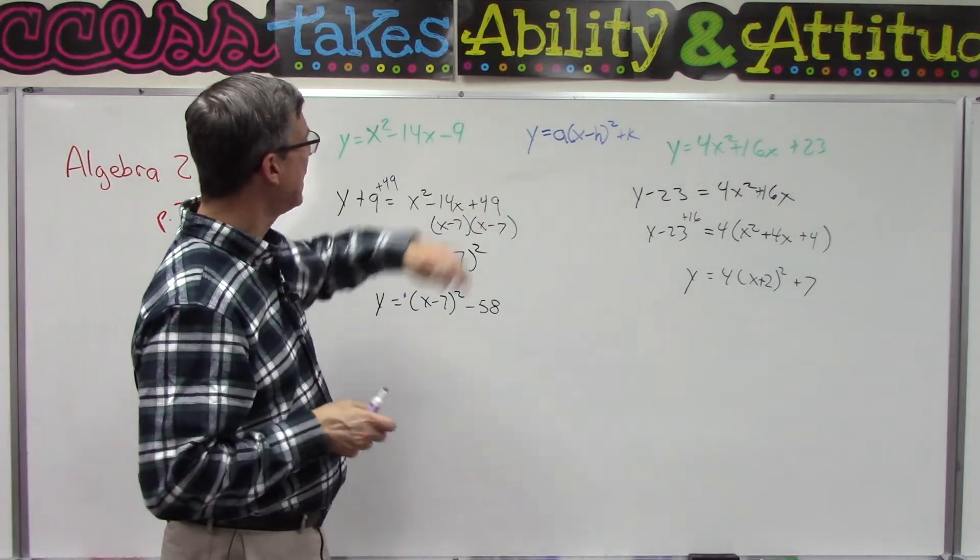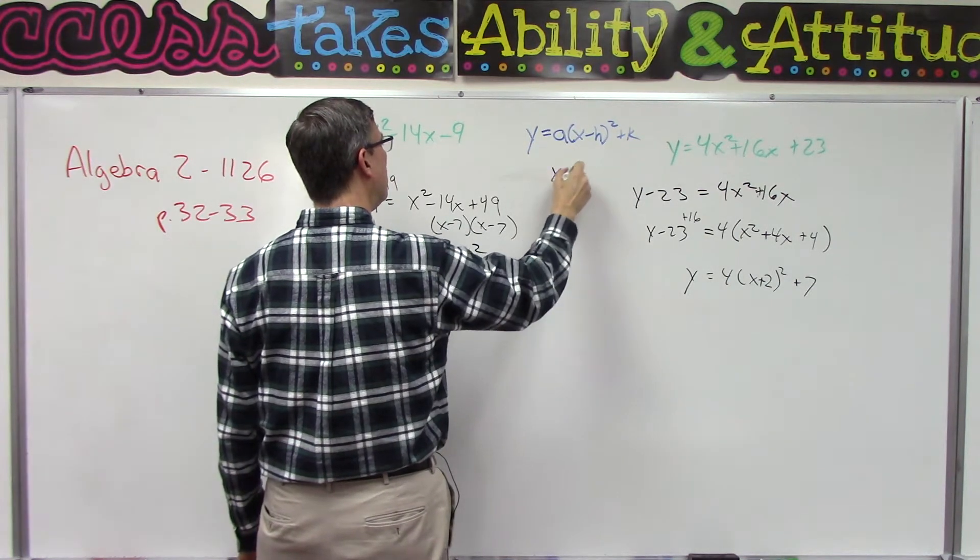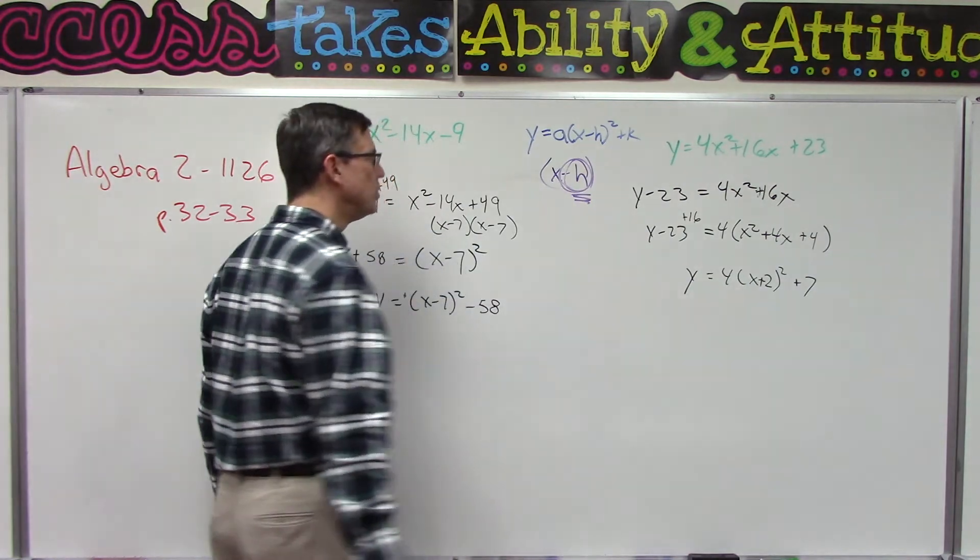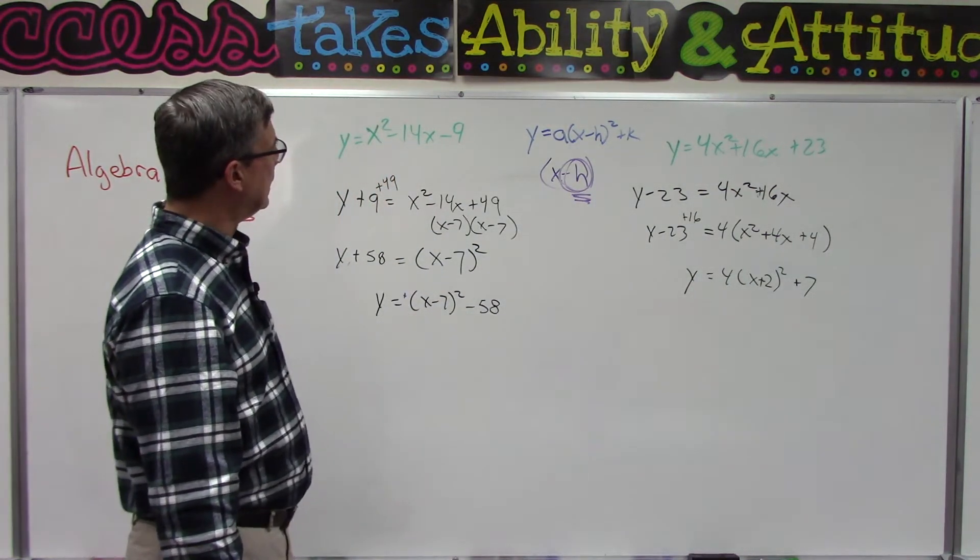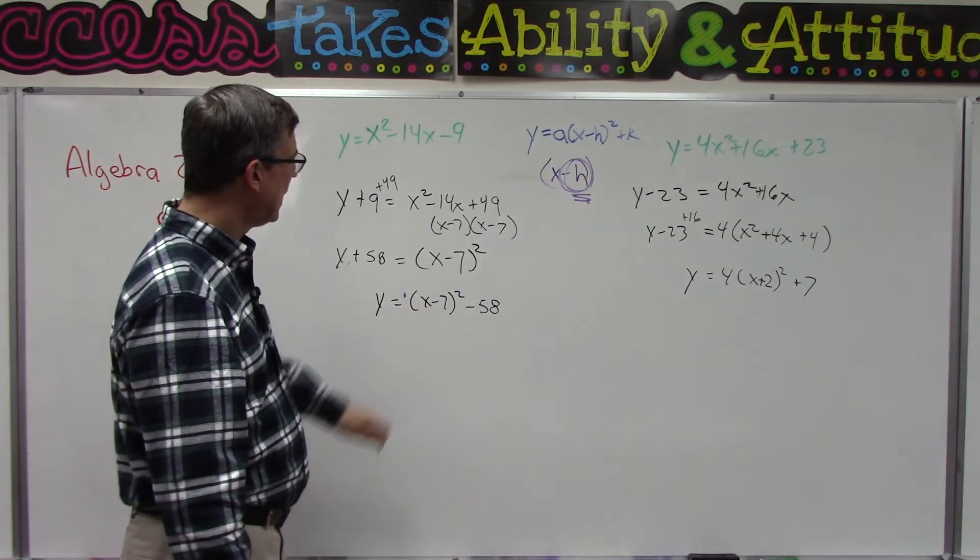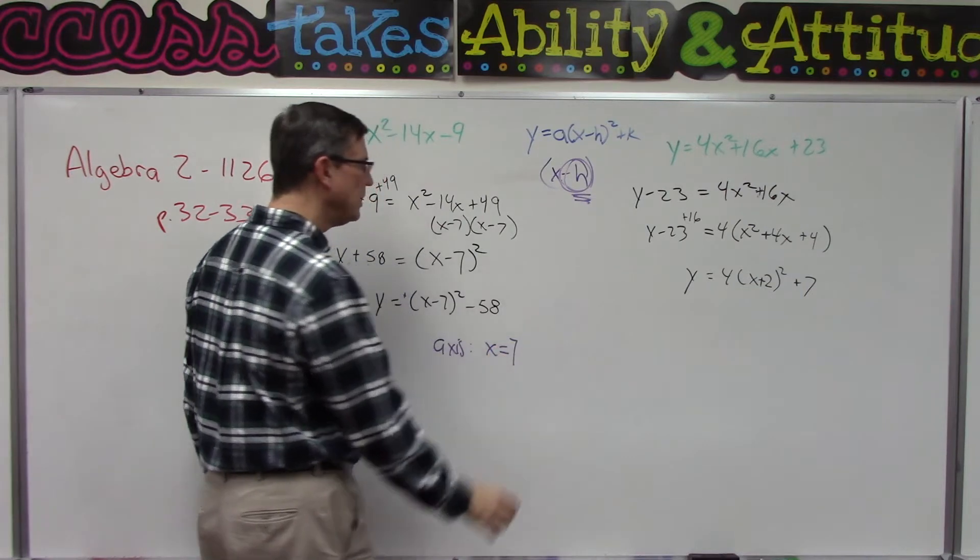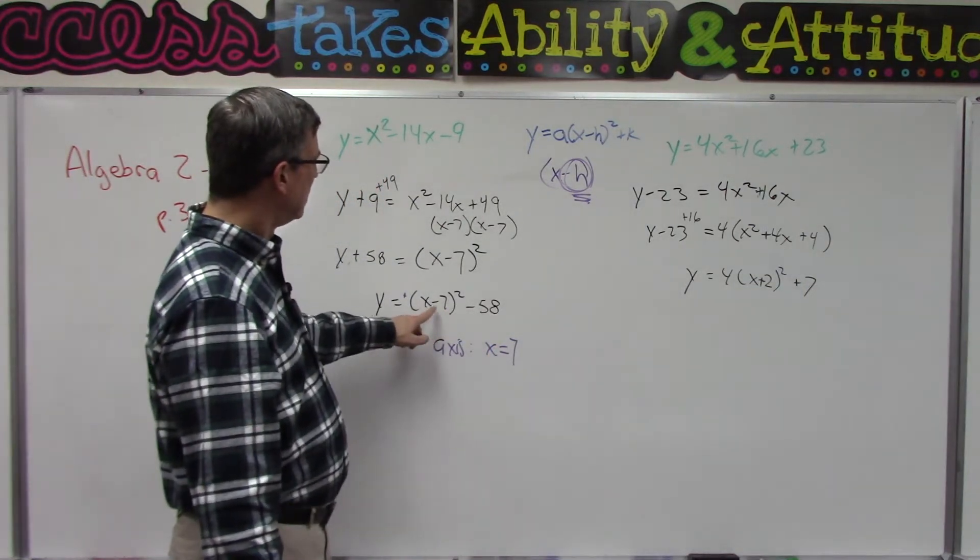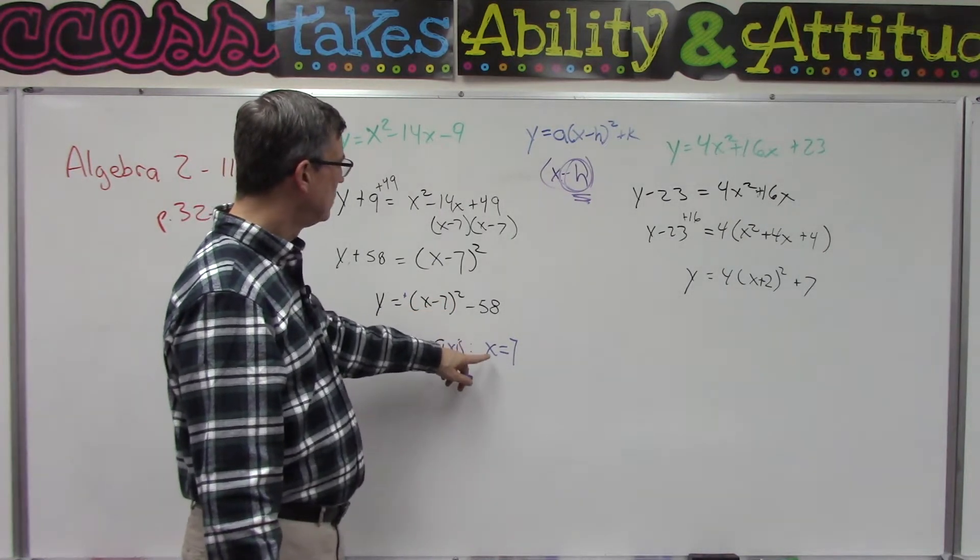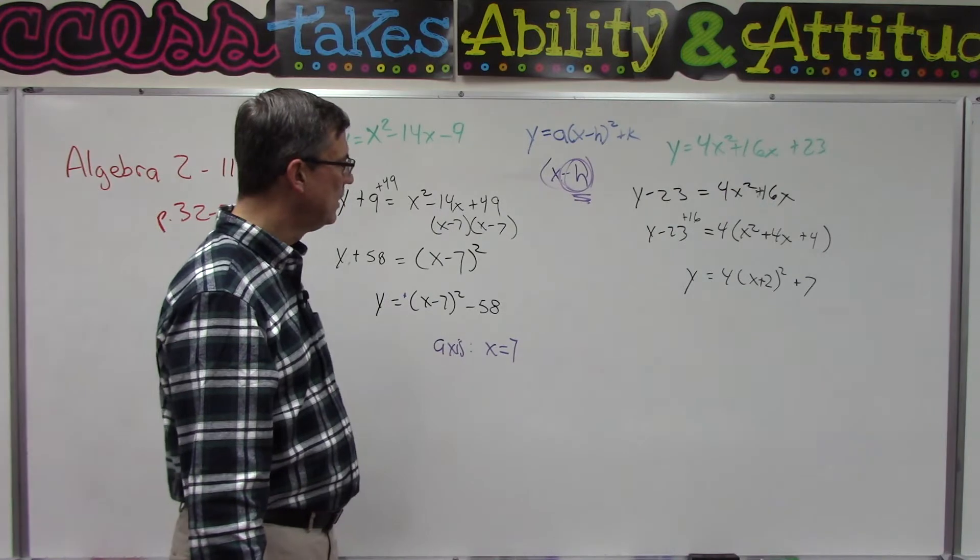But there's two important things we'll look at. One is the axis of symmetry which is this H value. So notice it says X minus H, this is the part that we are most interested in. What is the H value? If you say well this is X minus 7, then that means the axis of symmetry is X equals positive 7. So it's the opposite of what this looks like. The axis of symmetry is this H value which is positive 7.